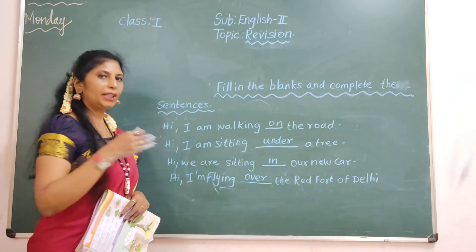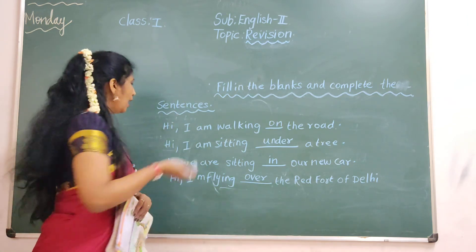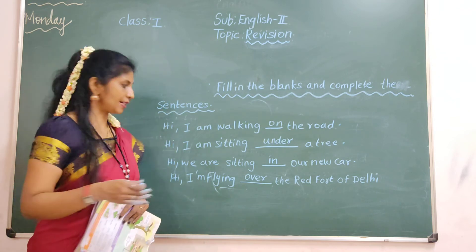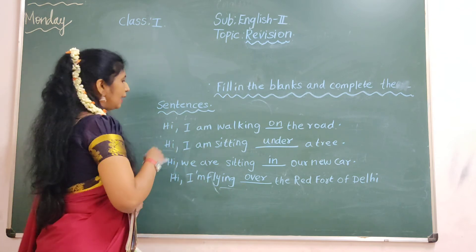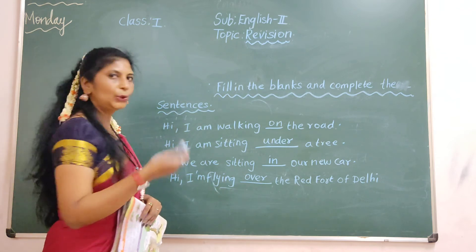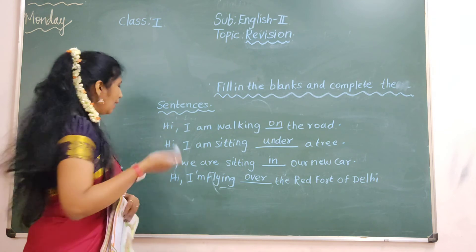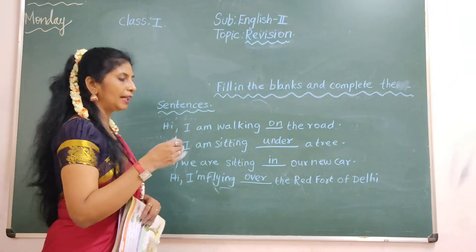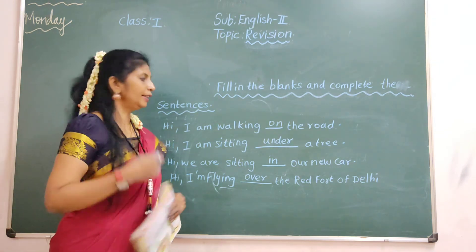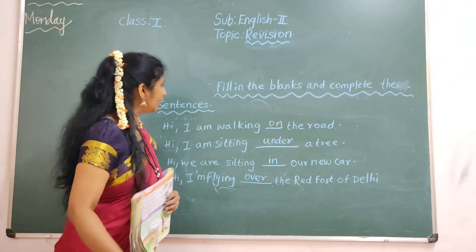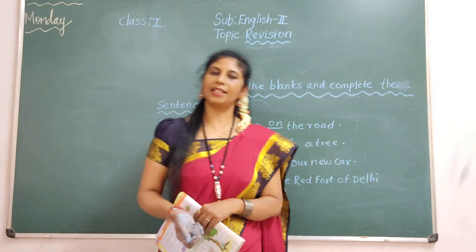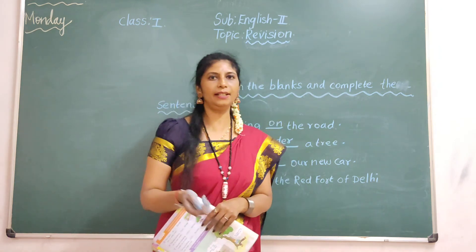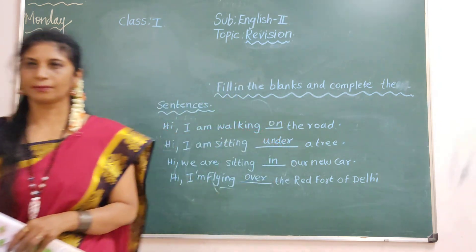Repeat: I am walking on the road. I am sitting under a tree. We are sitting in our new car. I am flying over the Red Fort of Delhi. Okay children, we will see in the next class. Thank you children.